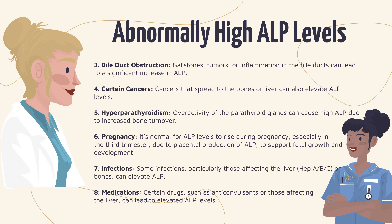At number five we have hyperparathyroidism — overactivity of the parathyroid glands can cause high ALP levels due to increased bone turnover. At number six we have pregnancy — it's normal for ALP levels to rise during pregnancy, especially in the third trimester, due to the placental production of ALP to support fetal growth and development. At number seven we have infections — some infections, particularly those affecting the liver like hepatitis A, B, or C, or infections affecting the bones, can also cause elevated ALP levels. At number eight we have certain medications — drugs like anticonvulsants or those affecting the liver can lead to elevated ALP levels on a blood report.